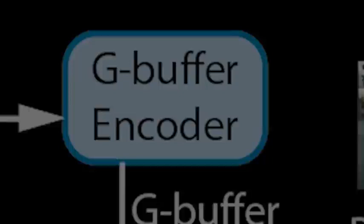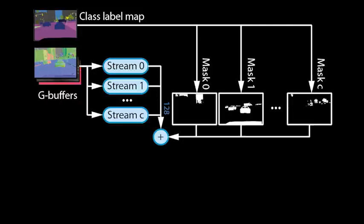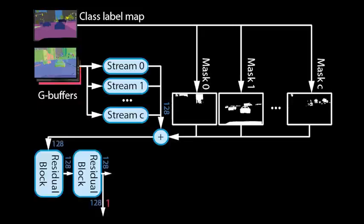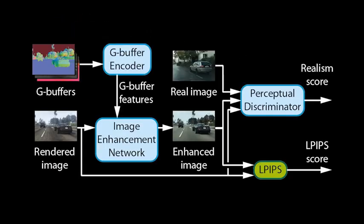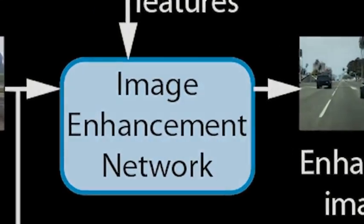Let us now zoom in on the G-buffer encoder. From the G-buffers, we can derive a semantic class label map, which assigns an object ID to every pixel. We pass the G-buffers through multiple convolutional network streams and fuse the streams again based on the object IDs. This allows the encoder to learn different ways of processing for each type of object — for example, trees will be treated differently from cars. The resulting feature tensors are further processed by residual blocks, which output tensors at multiple scales.